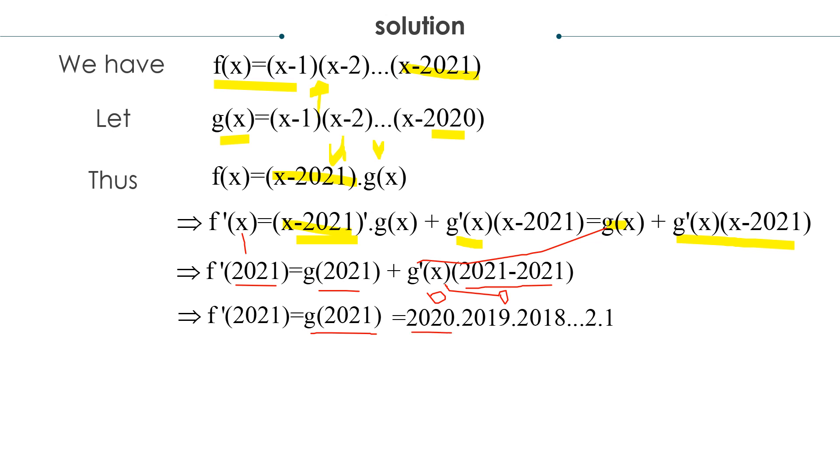So I got 2020 times 2019 times 2018, all the way until 1. I can see it's related to factorial.